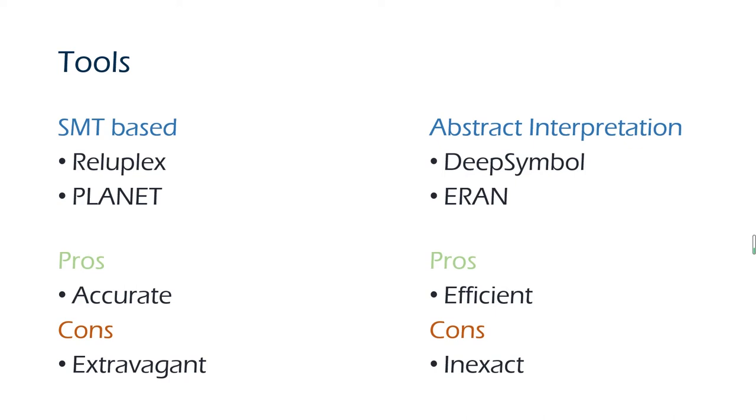The abstract interpretation-based methods include DeepSymbol and ERAN. DeepSymbol introduces the idea of symbolic propagation and significantly improves the performance of abstract interpretation on classical abstract domains like Box and Zonotope.